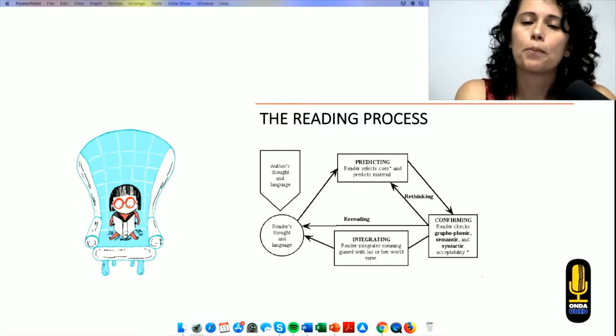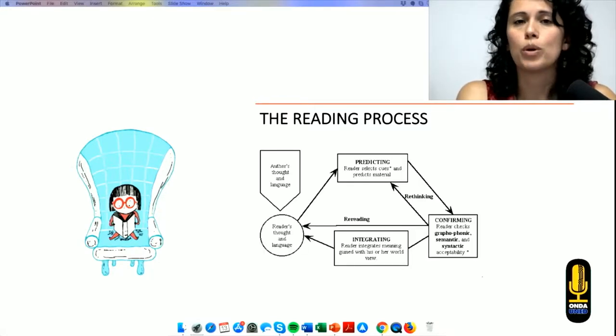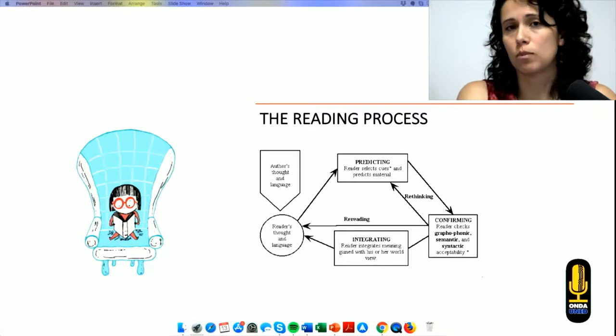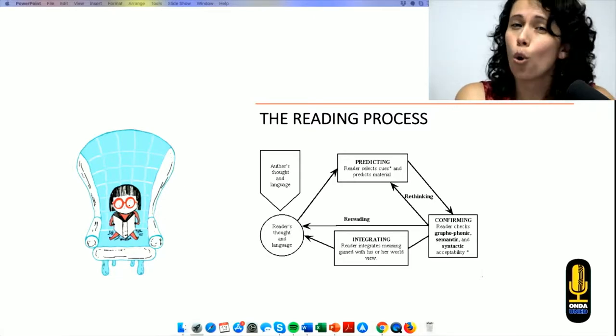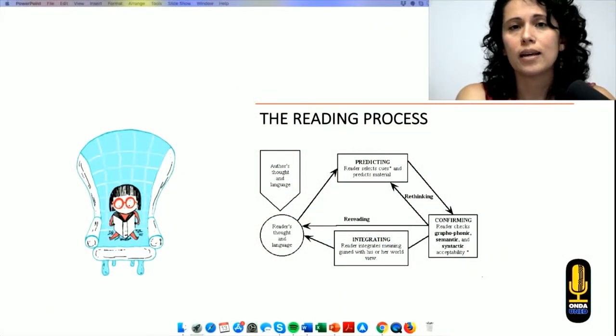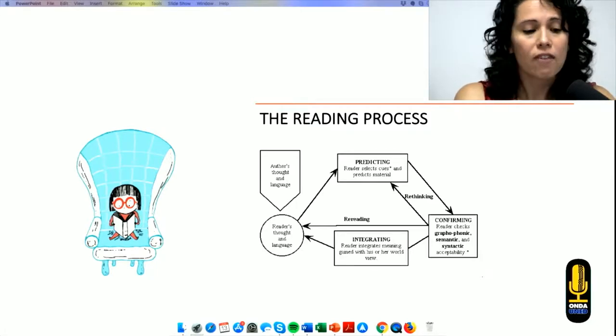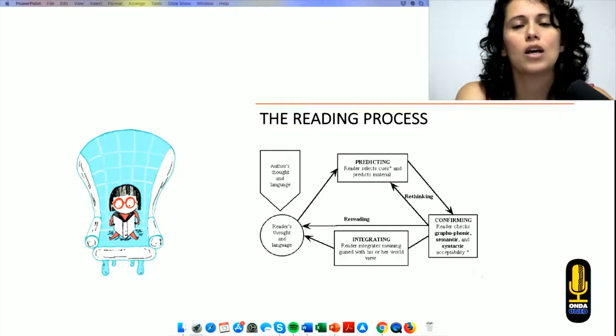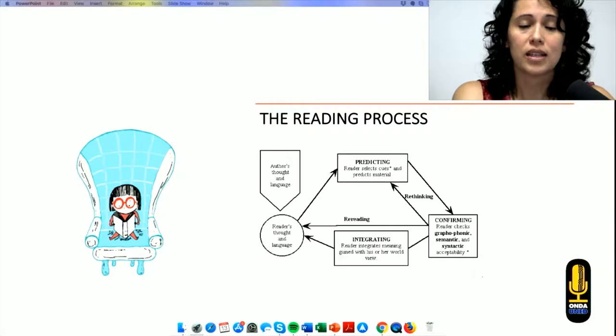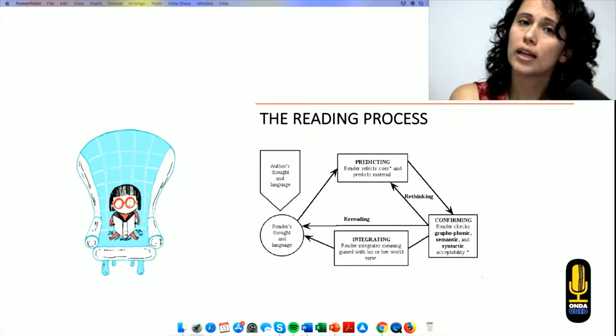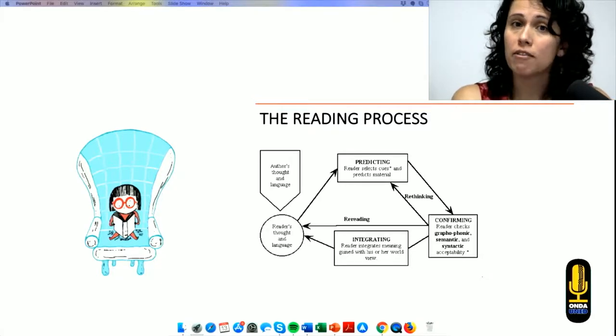In the pre-reading part, basically what we do is that we predict what the reading is going to be about. Then, we move to the while reading in which we actually read the text and confirm our predictions. And finally, we move to the integration part, which is a post-reading part. In this section, what we do is that we incorporate into our schemata the new knowledge, and it becomes meaningful and part of our language.